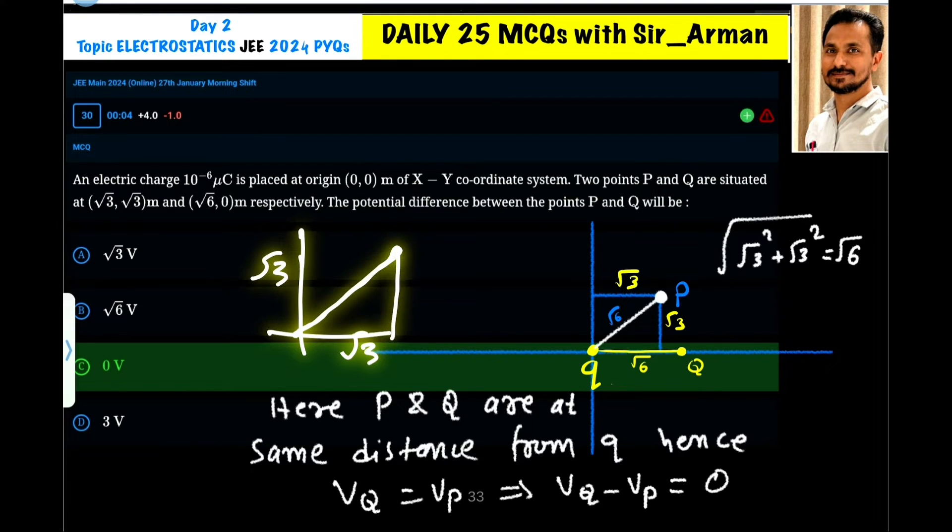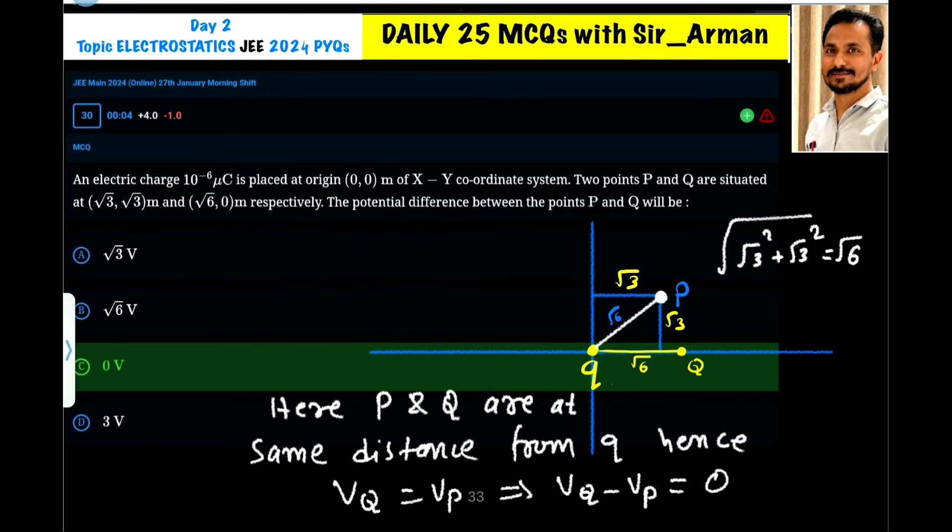Using Pythagoras theorem, if this side is √3 and this side is √3, then the hypotenuse becomes √6. So the distance from the charge is √6. The magnitude of displacement from the center is √6.